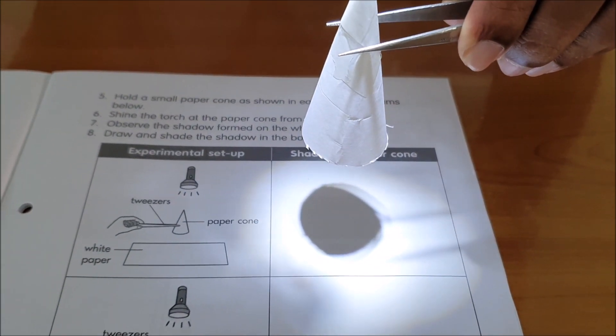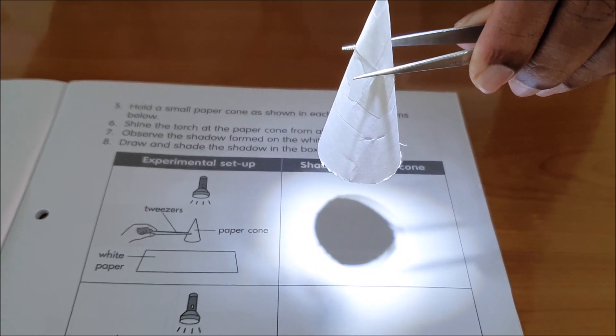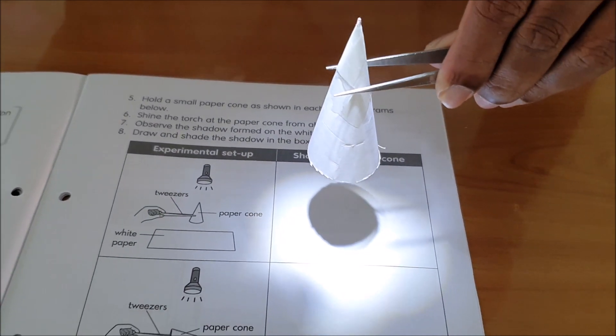You don't need to draw my tweezer. You just draw what you see when the light is shining from the top of the conical object. You can draw in this space.